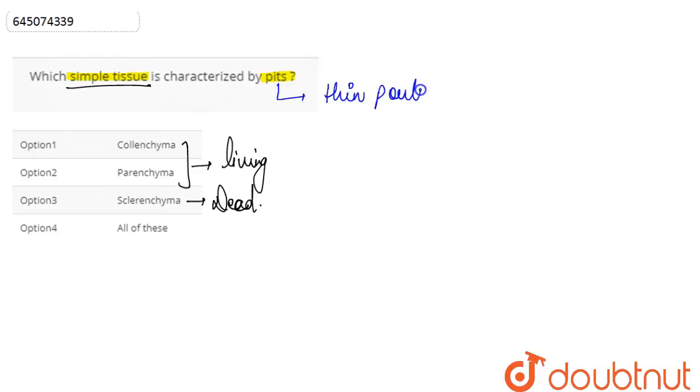We discuss what are pits. Pits are basically the thin portion of cell wall. Through the pits, the communication and the exchange of fluid basically occurs or takes place between cells.